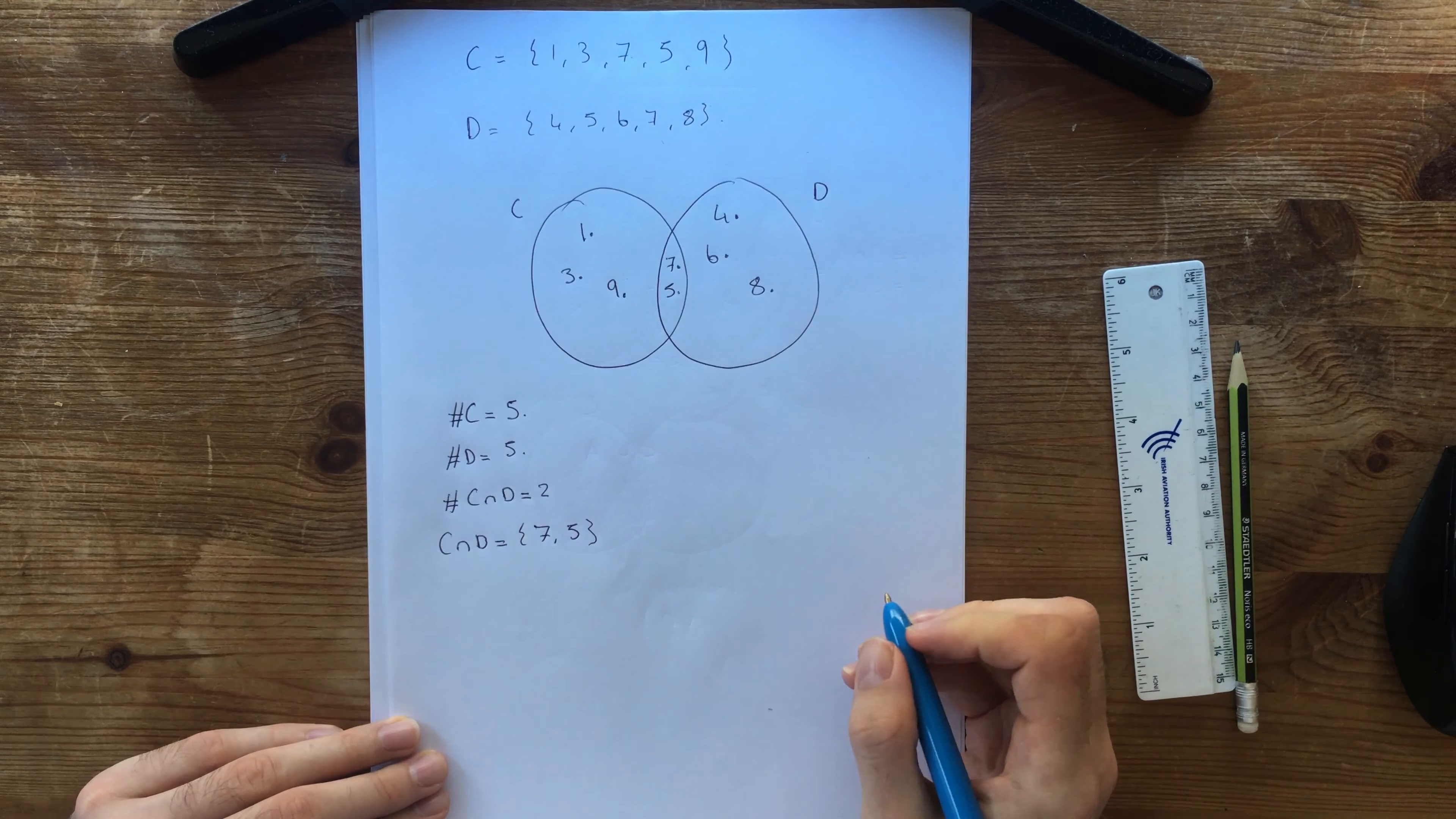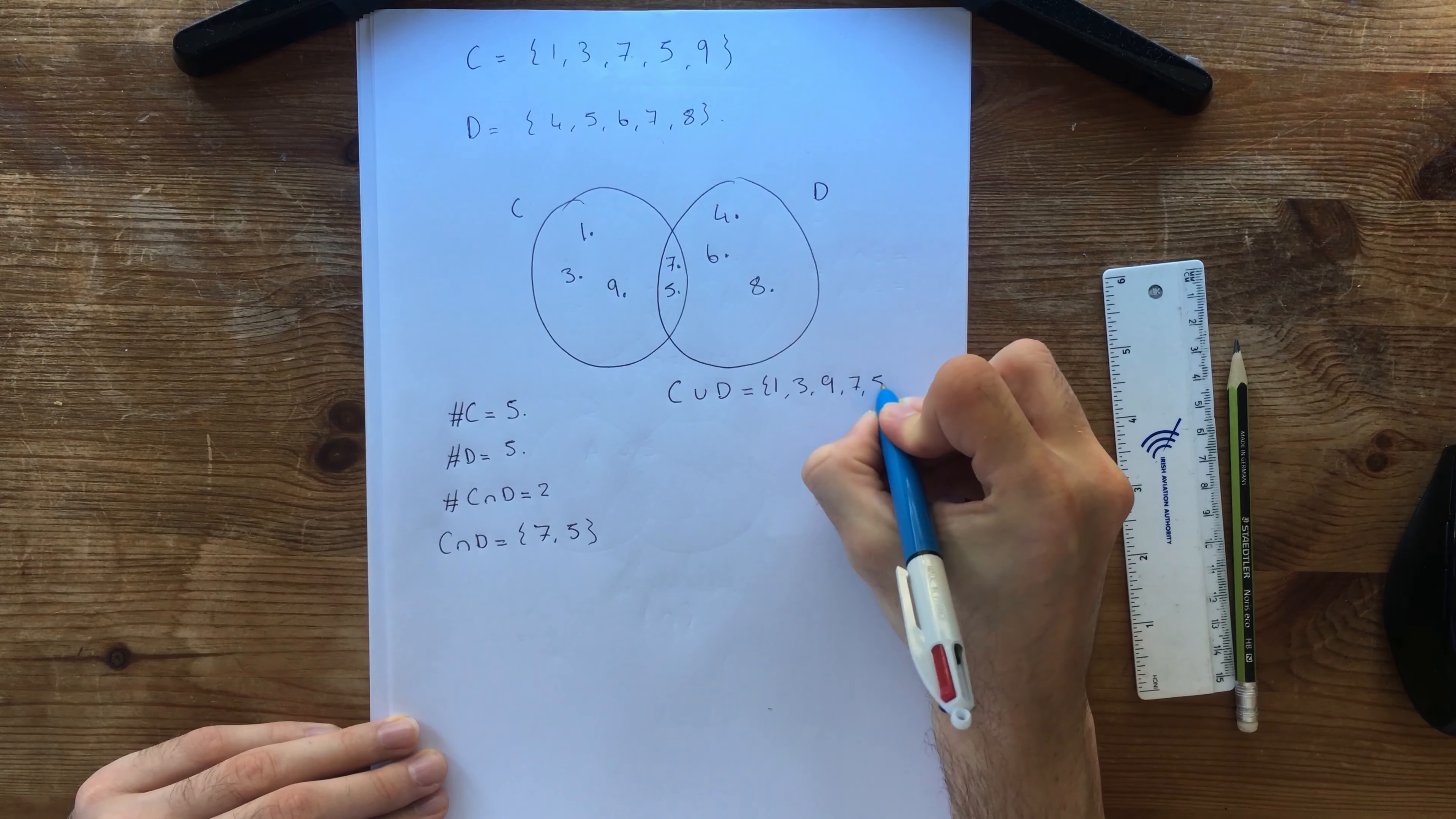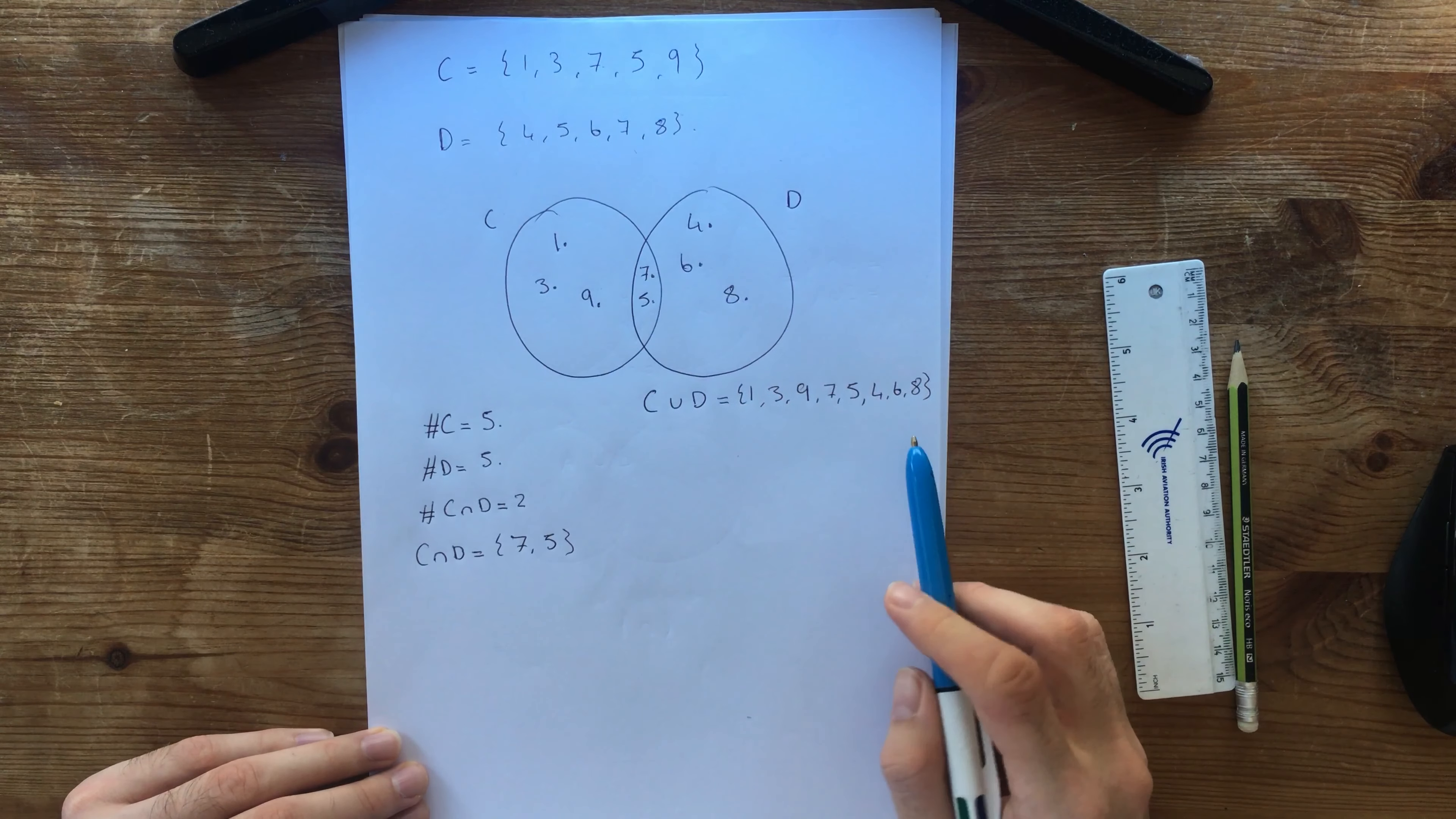And then finally, what is in C union D? So in C union D we have 1, 3, 9, anyway, 7 and 5. And then 4, 6 and 8. So it's a lot easier to figure out the union when you have them written out like this rather than like this because you might repeat an element. So remember, don't repeat what's in here. This is just all what's together.